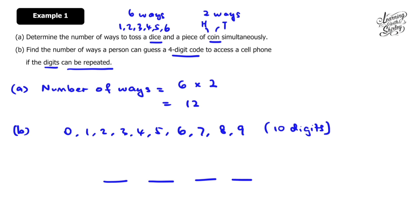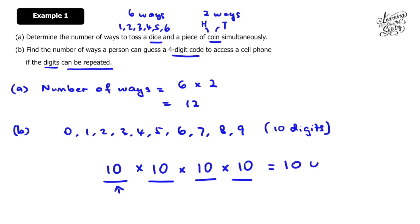For the first code, we can choose any digit from 0 to 9, so there are 10 ways for the first code. Since the digits can be repeated, the second, third, and fourth codes are also 10 ways each. We multiply them together: 10 times 10 times 10 times 10, and we get 10,000 ways.